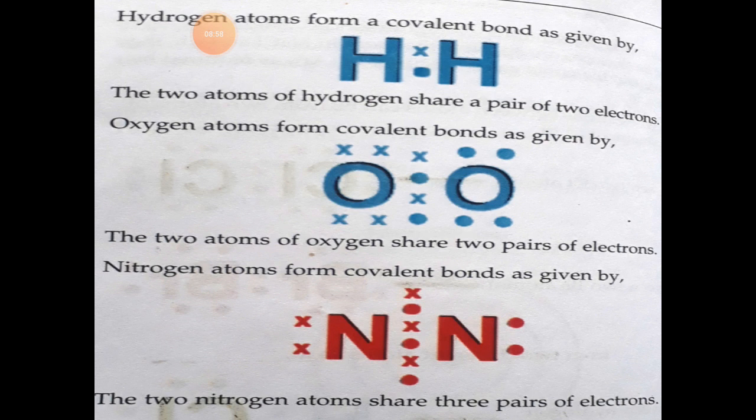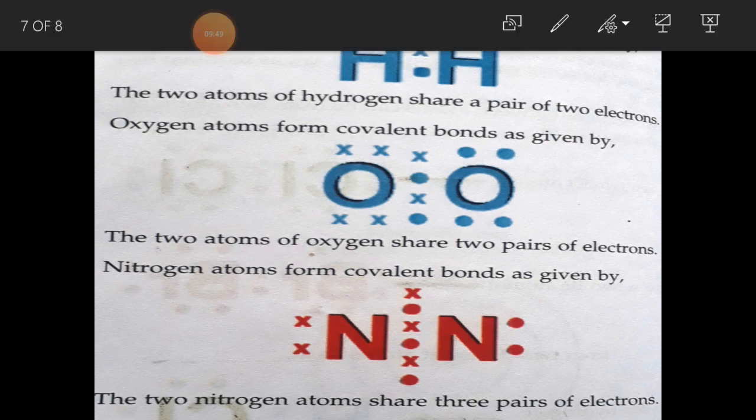So, we have different types of covalent bonds. Just focus on hydrogen, oxygen and nitrogen. We have single covalent bonds. They are formed by sharing one electron pair between two atoms in which each atom contributes one electron. As you can see in the example of hydrogen, we have double covalent bonds. They are formed by the sharing of two electron pairs between two atoms in which each atom contributes two electrons. See the example, oxygen atom forms covalent bonds by two atoms of oxygen sharing two pairs of electrons. Similarly, nitrogen atom forms covalent bonds and we call them as triple covalent bonds. They are formed by the sharing of three electron pairs between two atoms in which each atom contributes three electrons. The two nitrogen atoms share three pairs of electrons.